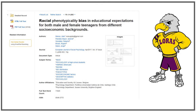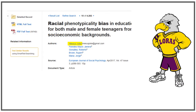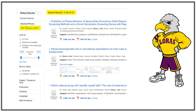If you are in a library database, finding the author's name, who they work for, and what else they've written is pretty easy. The detailed record will tell you who the author is and where they work if that information is included in the article. You can also click on the author's name to see a list of their publications that have been indexed in the database. This list will be incomplete, since no database is comprehensive, but it is a good place to start.